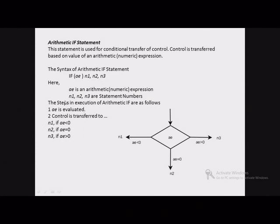These are the steps. First, AE — the arithmetic expression — is evaluated. Then, based on the value of the arithmetic expression, control is transferred to one of the three statement numbers.